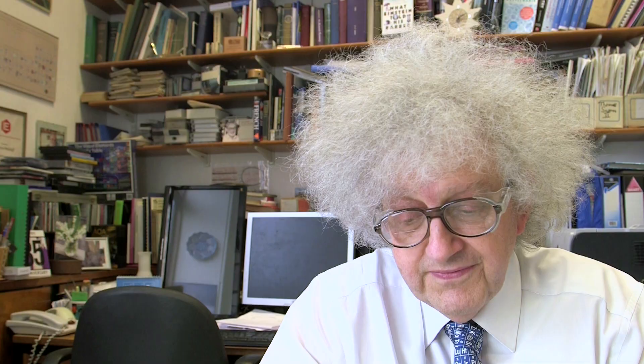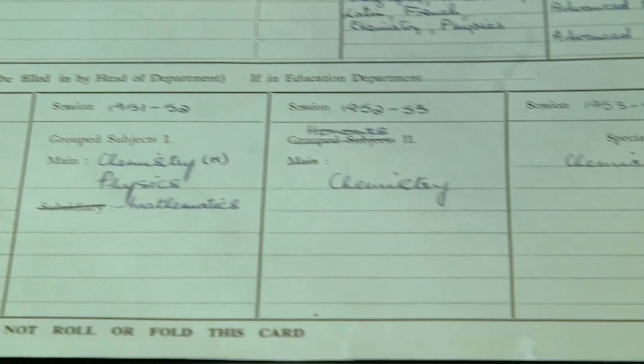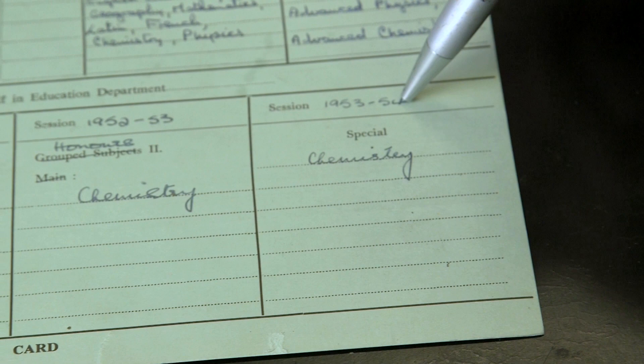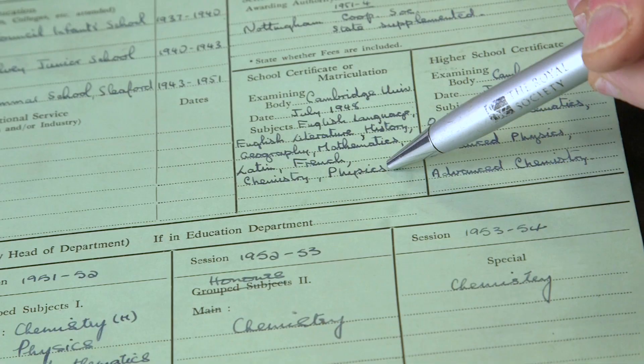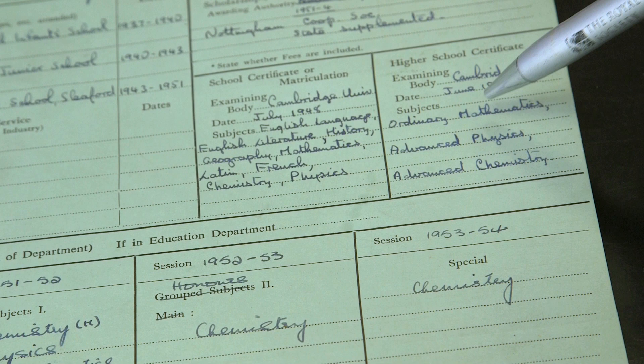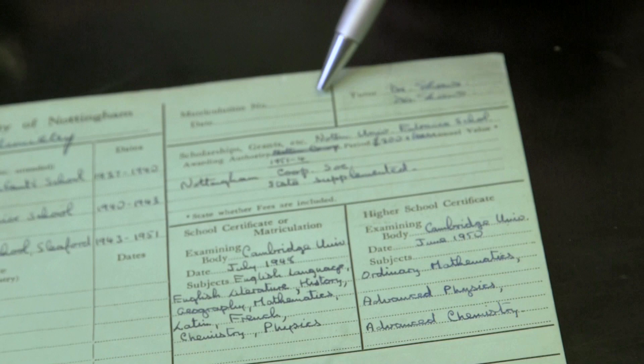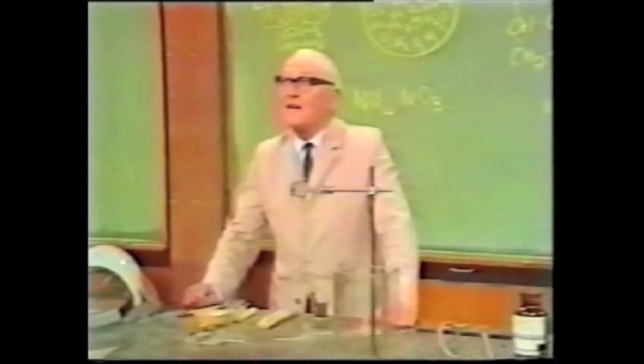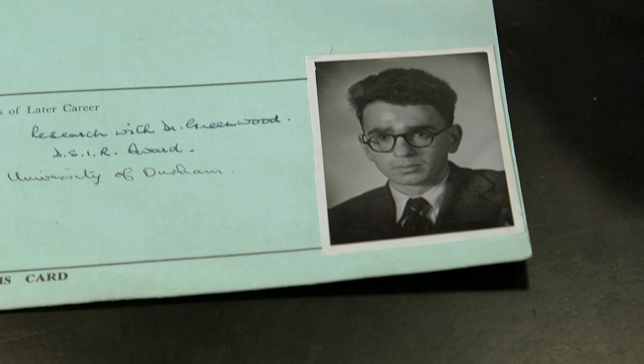He came to this university in 1950 and was an undergraduate here from 1951 to 1954, so he finished as an undergraduate 60 years ago. The card tells you the subjects he studied at school and also the name of his tutor, who was the famous explosives lecturer B.D. Shaw. On the back is a rather fine photo of him — he looked quite serious. Students wore ties in those days.